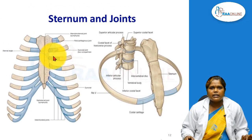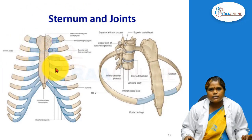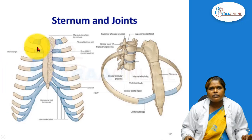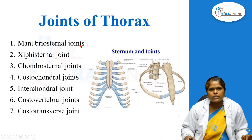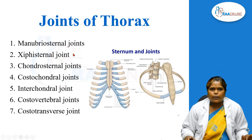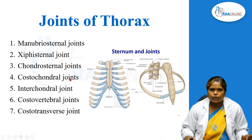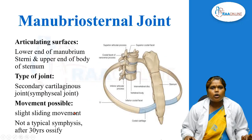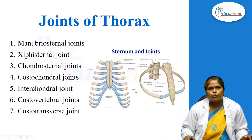Here we can see the joints of the thorax. The joints are: first, the manubrio-sternal joint; next, the xiphi-sternal joint; then the chondro-sternal joint; the costo-chondral joint; the interchondral joint; the costo-vertebral joint; and the costo-transverse joint. These are all the joints of the thorax.